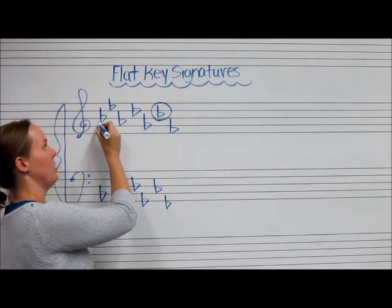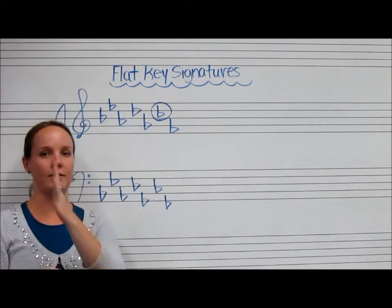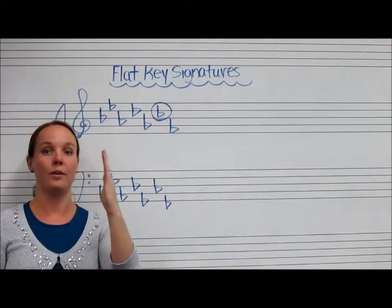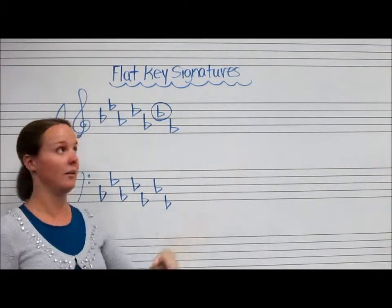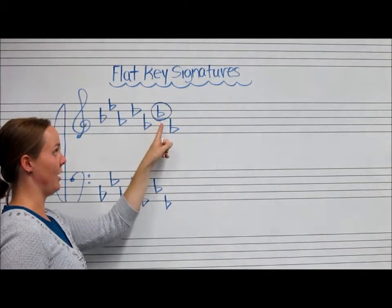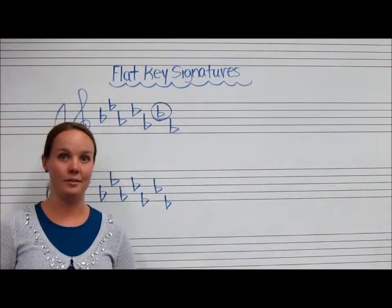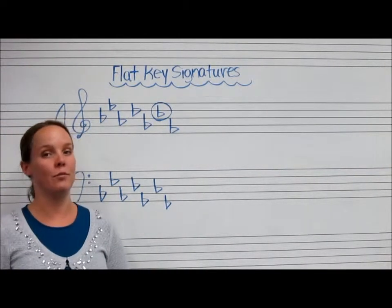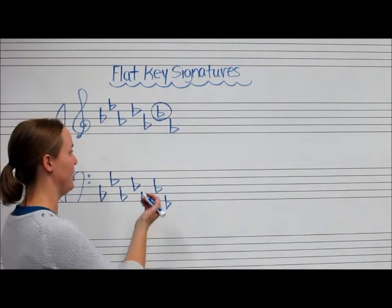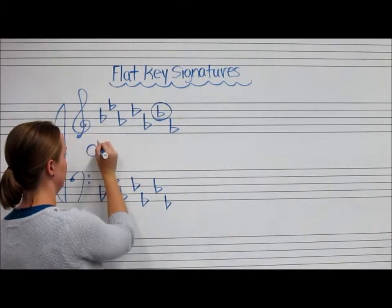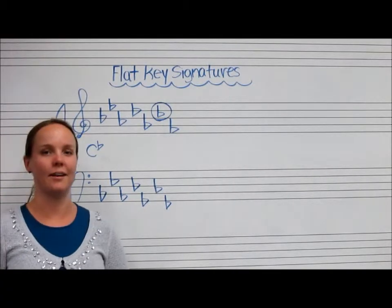It doesn't matter that you're going up and down vertically. It all has to do with how they move across the score from left to right. So this is your second-to-last flat. That note is C, and therefore we are in the key of C-flat. You would label it C-flat, just like that.